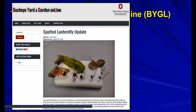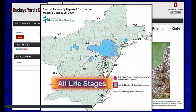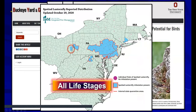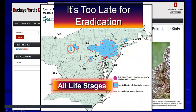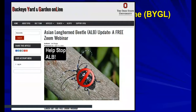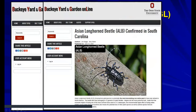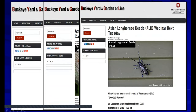Spotted lanternfly has been in the news. My colleague Amy Stone works on non-native invasives, and just about two weeks ago it was confirmed that we have a population in eastern Ohio. Unfortunately, this insect is already too widespread for eradication. Get BYGL alerts - we won't be dealing with quite the same challenge we had with ash borer, and certainly not potentially the same challenge as Asian longhorn beetle. Asian longhorn beetle is a true tree killer, and we do hope it gets eradicated.